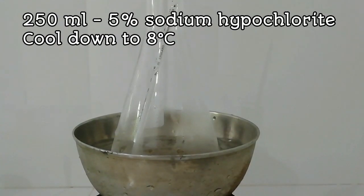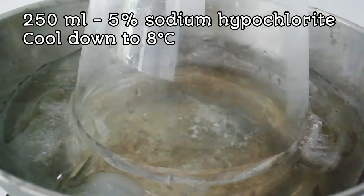First, 250 ml of 5% sodium hypochlorite solution is cooled to 8 degrees Celsius.